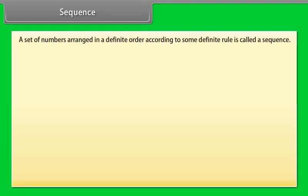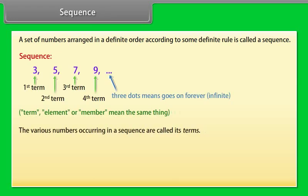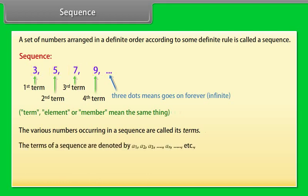Sequence: A set of numbers arranged in a definite order according to some definite rule is called a sequence. The various numbers occurring in a sequence are called its terms. The terms of a sequence are denoted by a1, a2, a3, till an, etc.